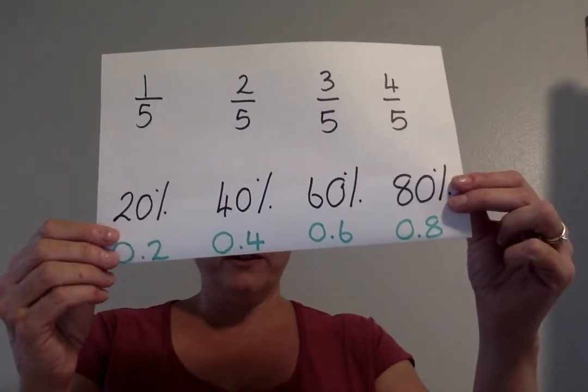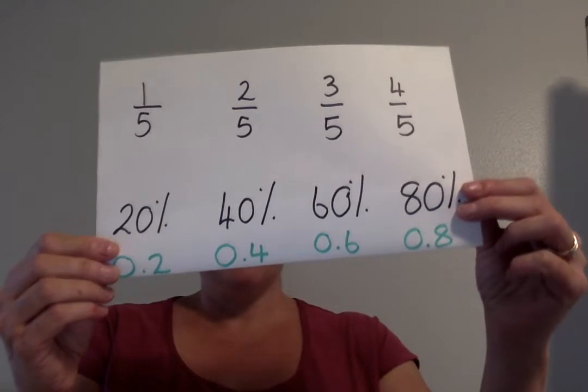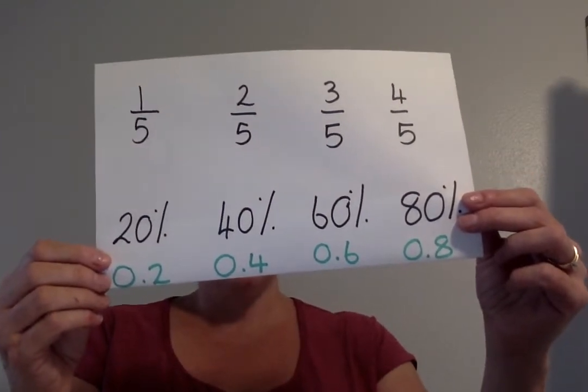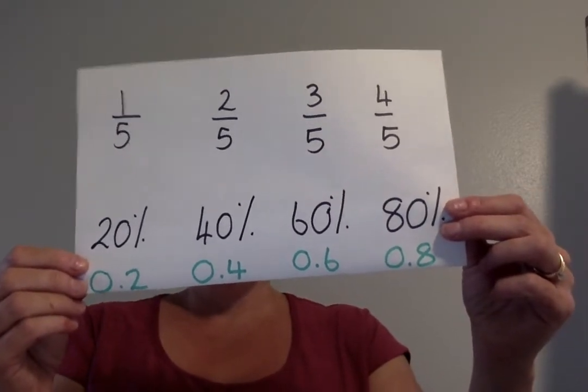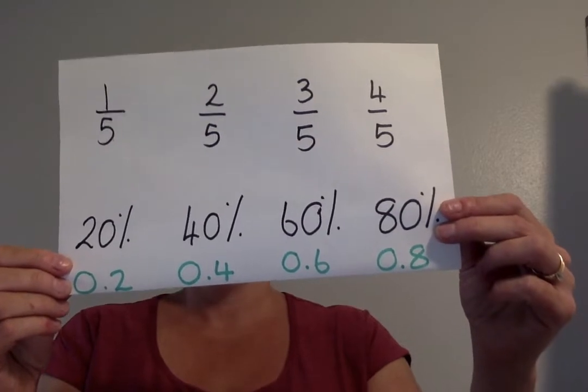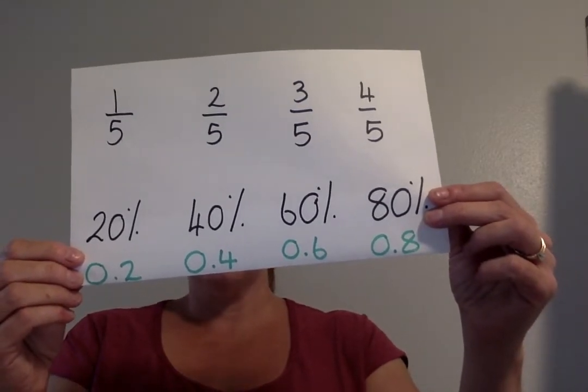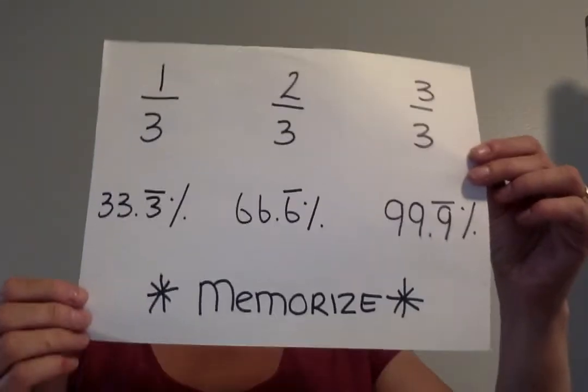If you have one-fifth, you have 0.2, which is 20%. Two-fifths, 0.4, 40 percent. Three-fifths, 0.6, 60 percent, and four-fifths, 0.8, 80 percent. And then the one I need you to memorize because it's always going to appear on a test...